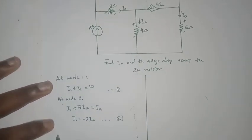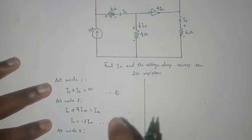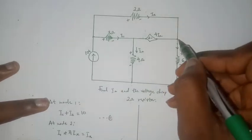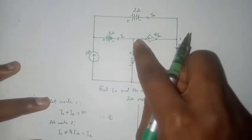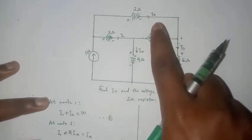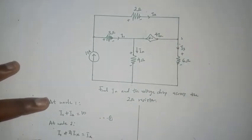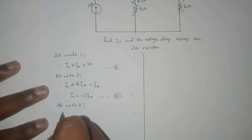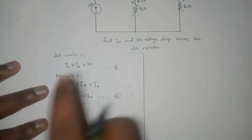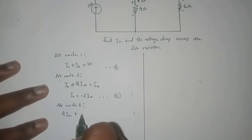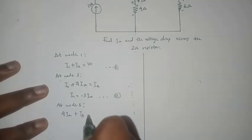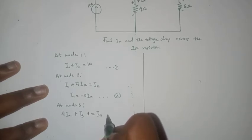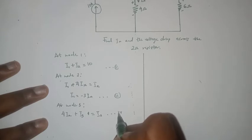Then we go to node 3. So we have 4ix leaving, i3 leaving, and then i2 entering. So we can say that 4ix plus i3 equals i2. Let's call this our fourth equation.